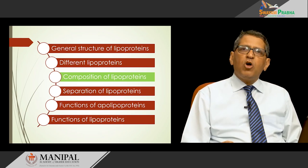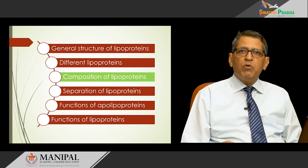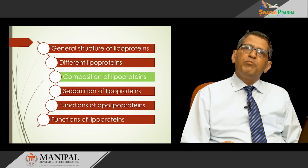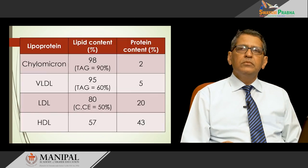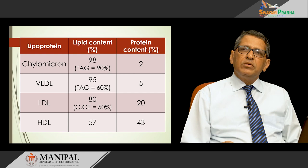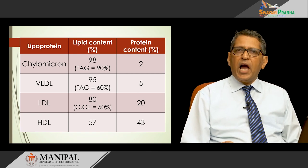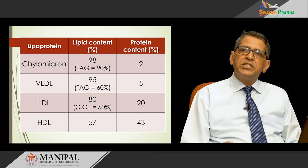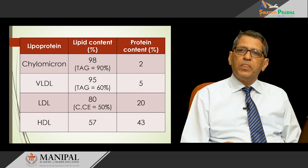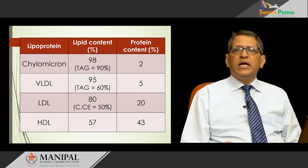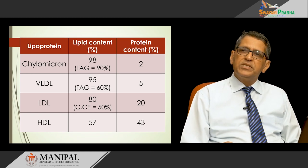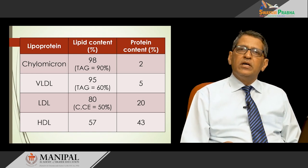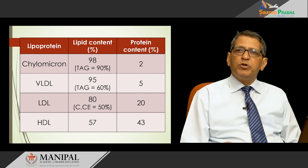The composition of lipoproteins differs with respect to lipids and proteins. Chylomicron is richest in lipids — 98% lipids and only 2% protein — and is richest in triacylglycerol. VLDL has 95% lipids and only 5% protein, and though VLDL is also rich in triacylglycerol, the percentage is much lesser compared to chylomicrons.